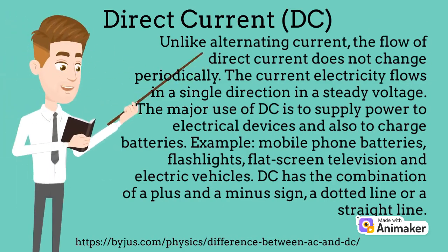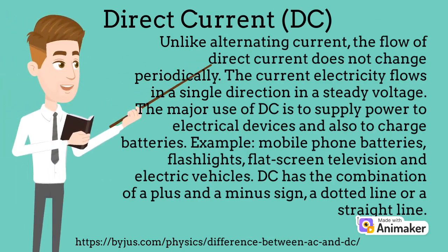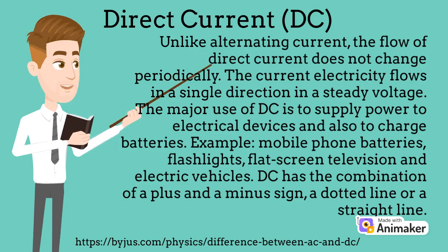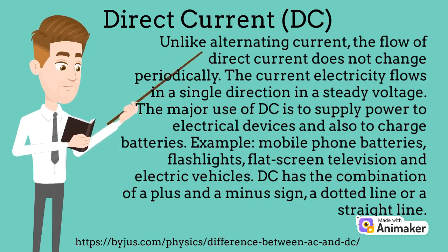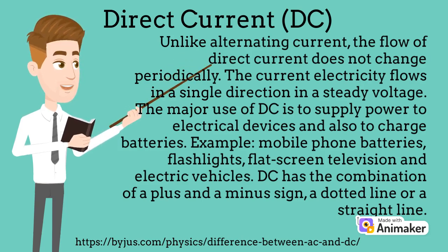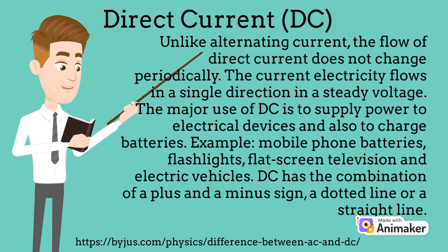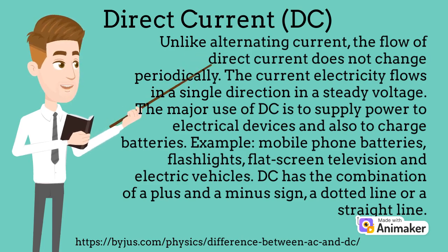Unlike alternating current, the flow of direct current does not change periodically. The current electricity flows in a single direction at a steady voltage. The major use of DC is to supply power to electrical devices and also to charge batteries — for example, mobile phone batteries, flashlights, flat screen televisions, and electric vehicles. DC has the combination of a plus and a minus sign, a dotted line or a straight line.